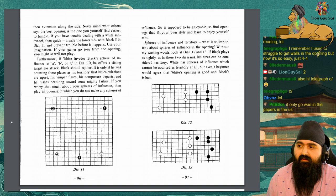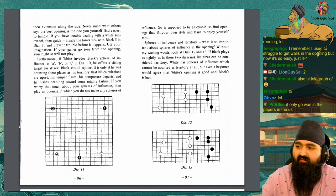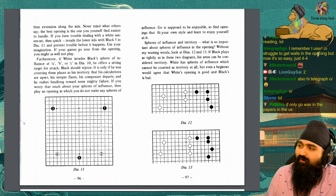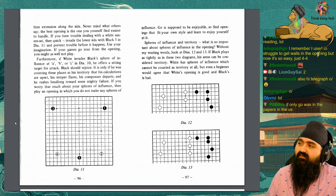Furthermore, if white invades black's sphere of influence at A, B, or C in diagram 10, he offers a sitting target for attack, black should rejoice. It is only as if he is counting those places as his territory that his calculations are upset, his temper flares, his composure departs, and he rushes headlong towards a mighty failure. If you worry that much about your spheres of influence, then play an opening in which you don't make any spheres of influence. Go is supposed to be enjoyable, so find openings that fit your own style and learn to enjoy yourself at it.